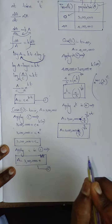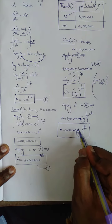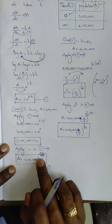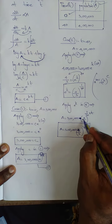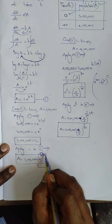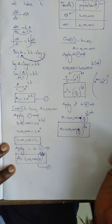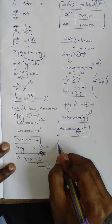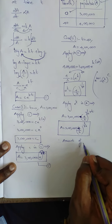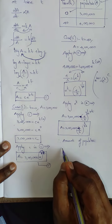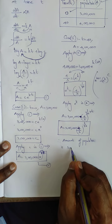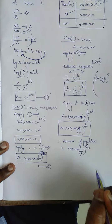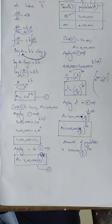This is the amount of population present. e^k is (4/3)^(1/40), and with the exponent t, it becomes (4/3)^(t/40). Therefore, the amount of population is: A = 3 lakh × (4/3)^(t/40). Thank you.